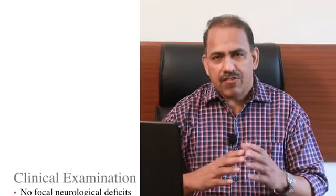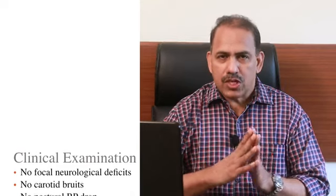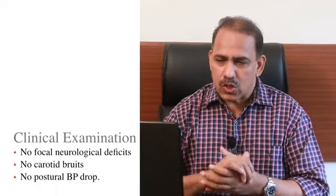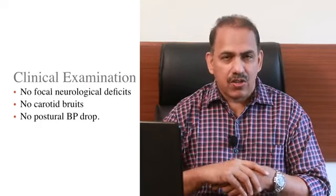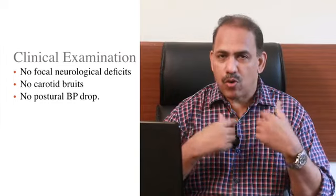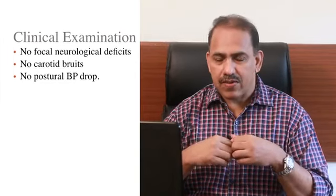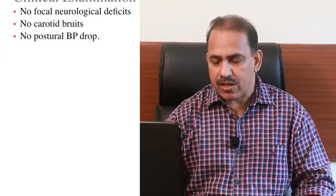She had transient weakness and numbness of the left upper and lower limb, facial deviation, and dysarthria. Clinical examination showed she is fully conscious and oriented, with no focal neurological signs, no carotid bruit on either side, no significant blood pressure difference, and the cardiovascular system was normal with no murmurs.